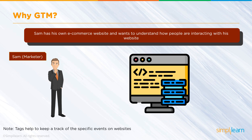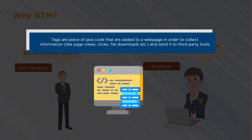Why GTM? Because it helps us track all that interactivity. All GTM does is allow you to place a piece of JavaScript code — a script added to a web page to collect information. That's really what a tag is: just some script that gets put on a web page to collect information like page views, clicks, etc., and it sends that data to third-party tools.